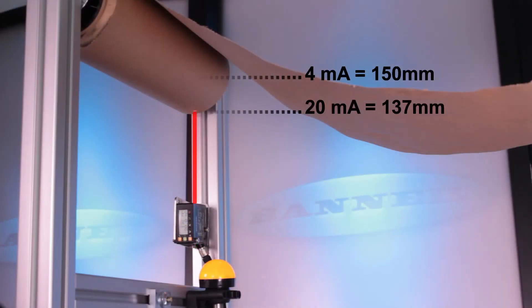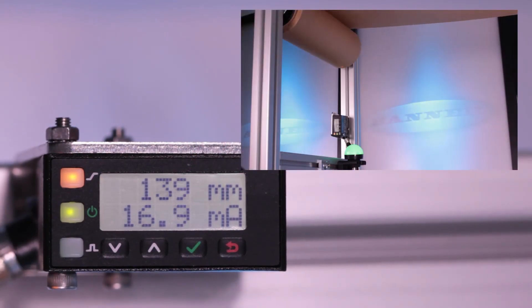The analog output is set from 137mm to 150mm with a negative slope, so as the roll unwinds, the analog output will decrease.